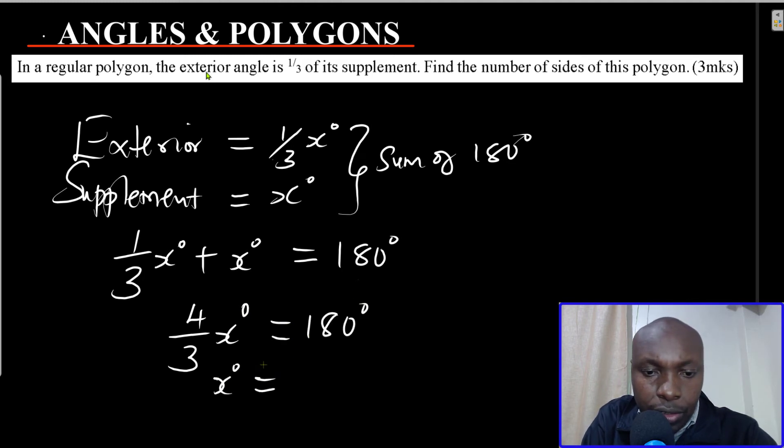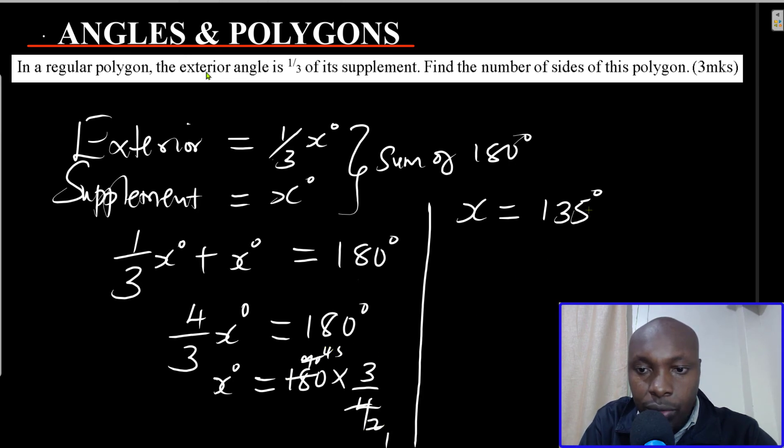x will be, x degrees will be given by 180 multiplied by the reciprocal of 4 over 3, which is 3 over 4. So this will give x equals, when you work out this one, 180 multiplied by 3 divided by 4, this will give 135 degrees. So this by 2 you get 90, this one will give 45 times 3, which is 135.